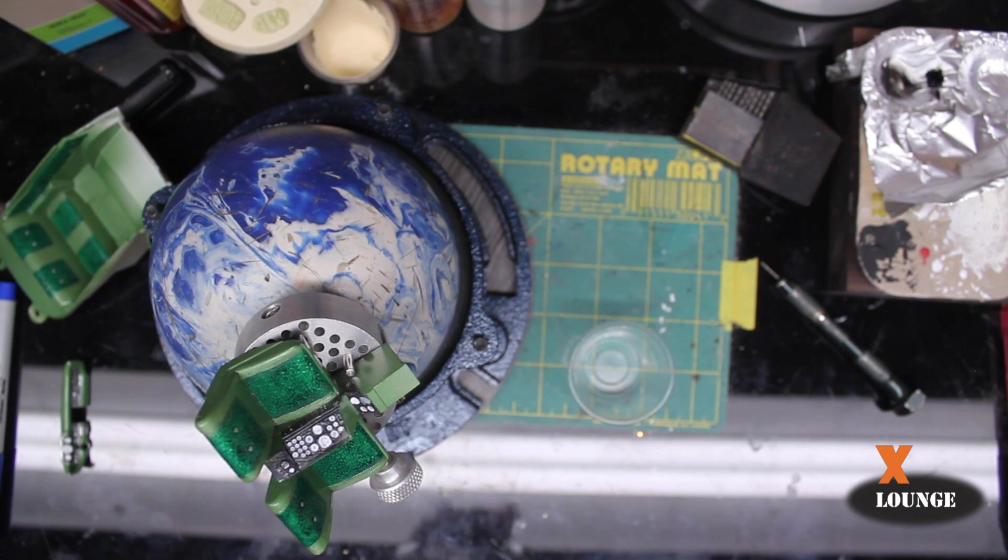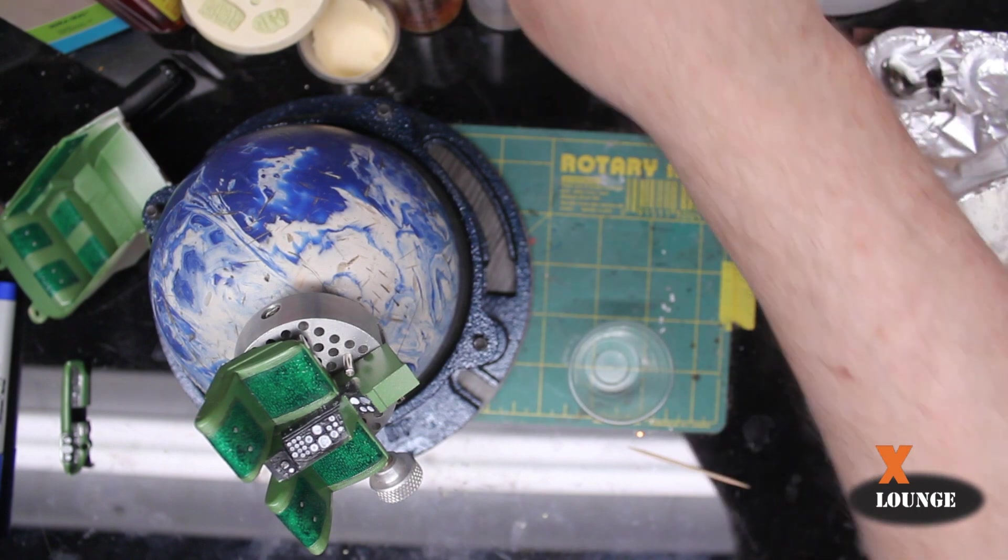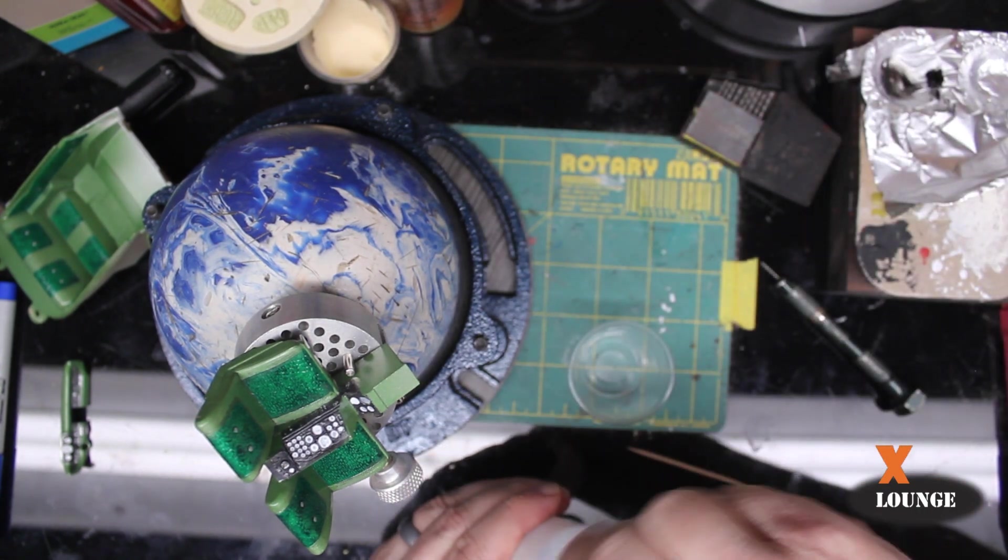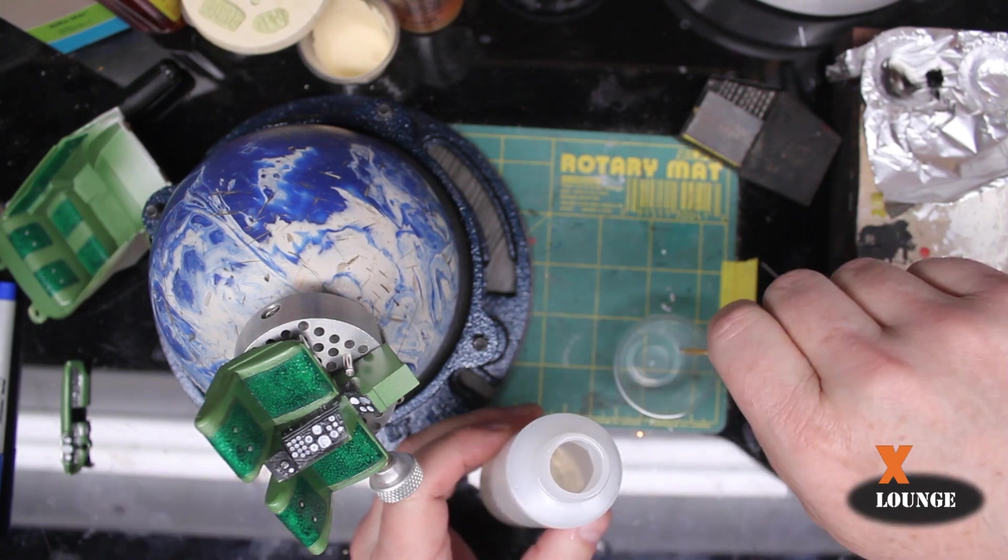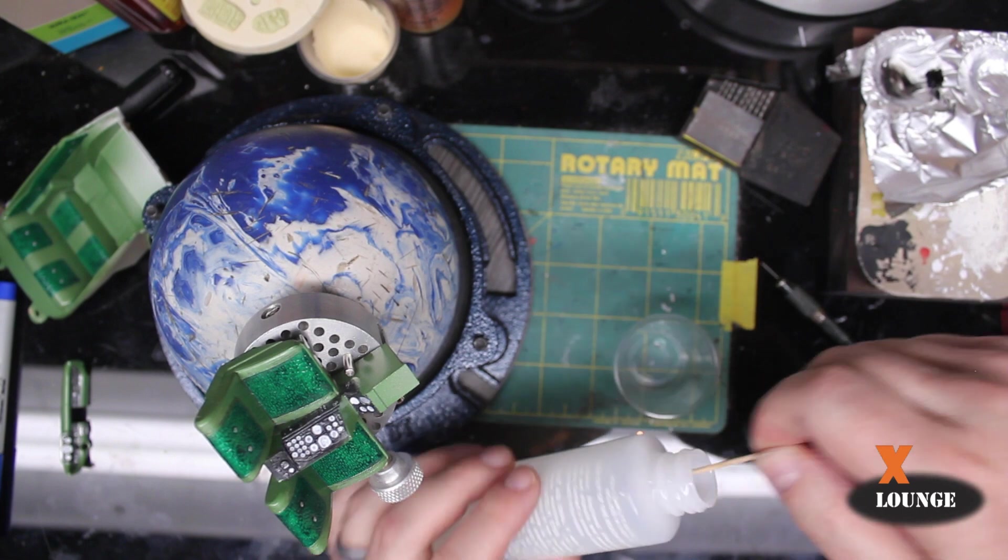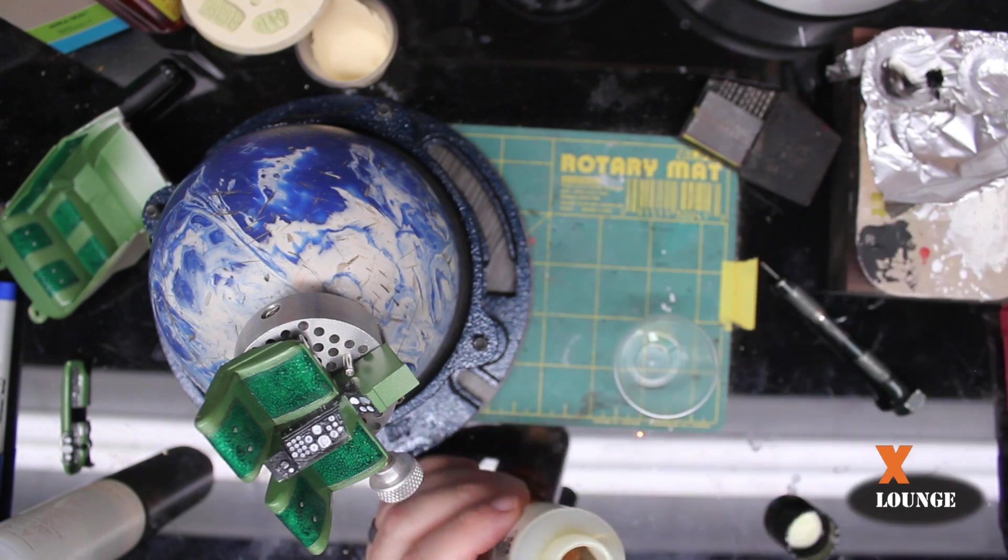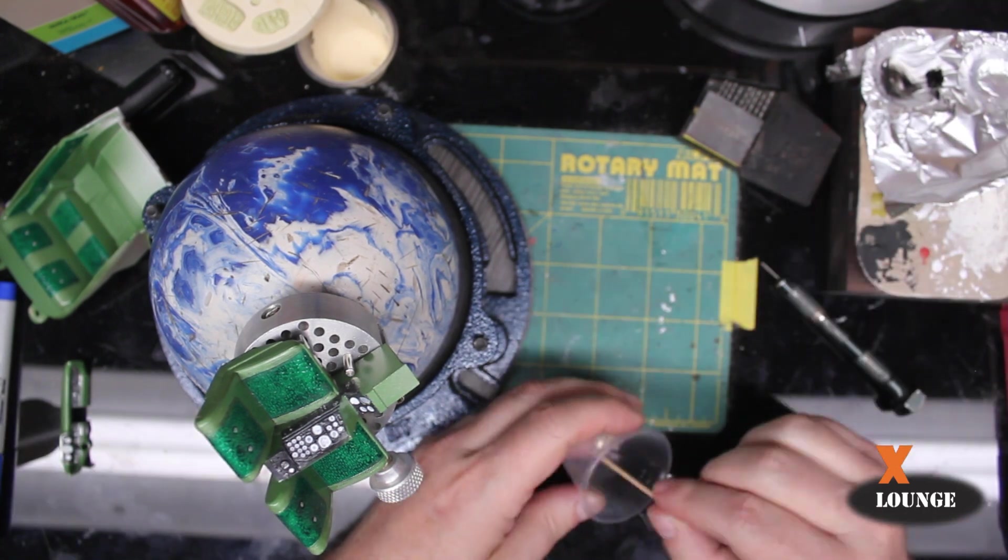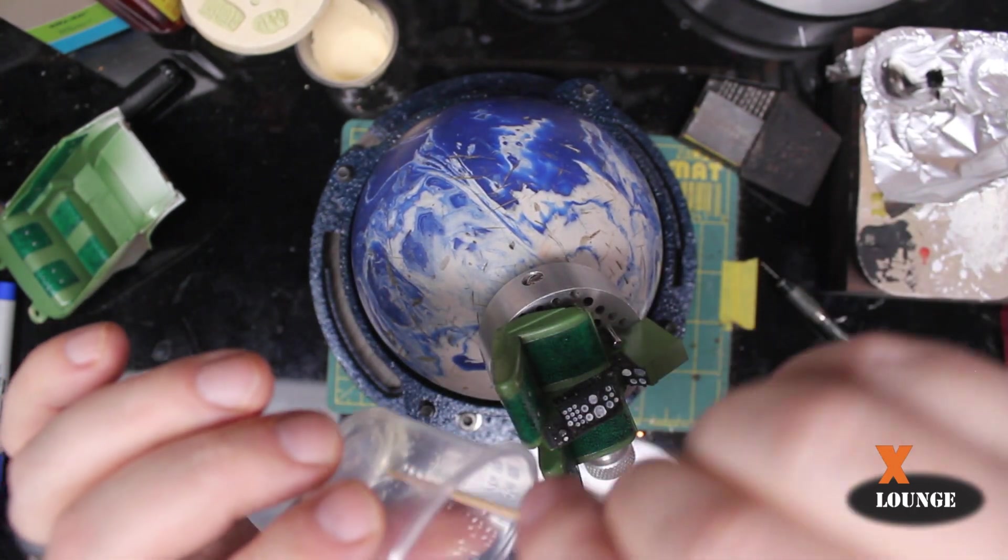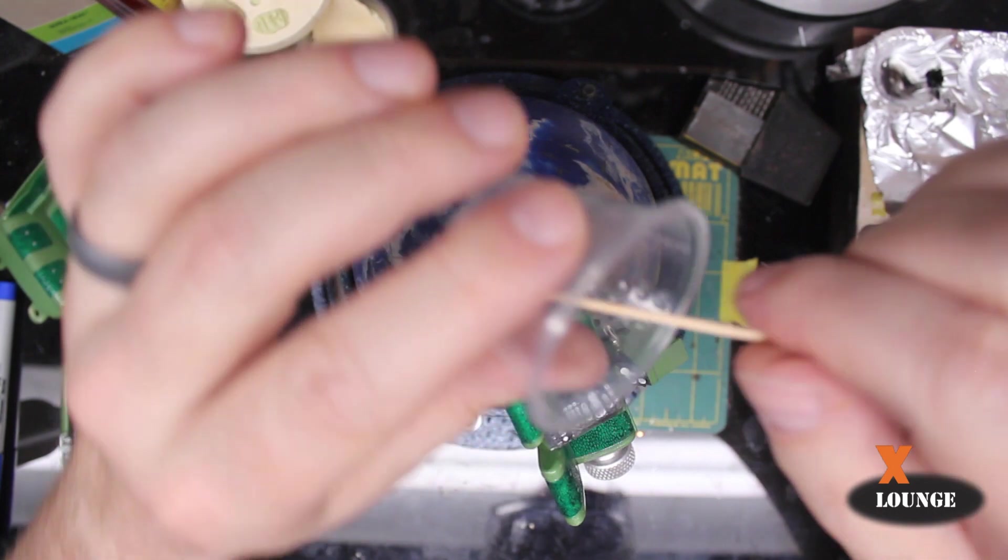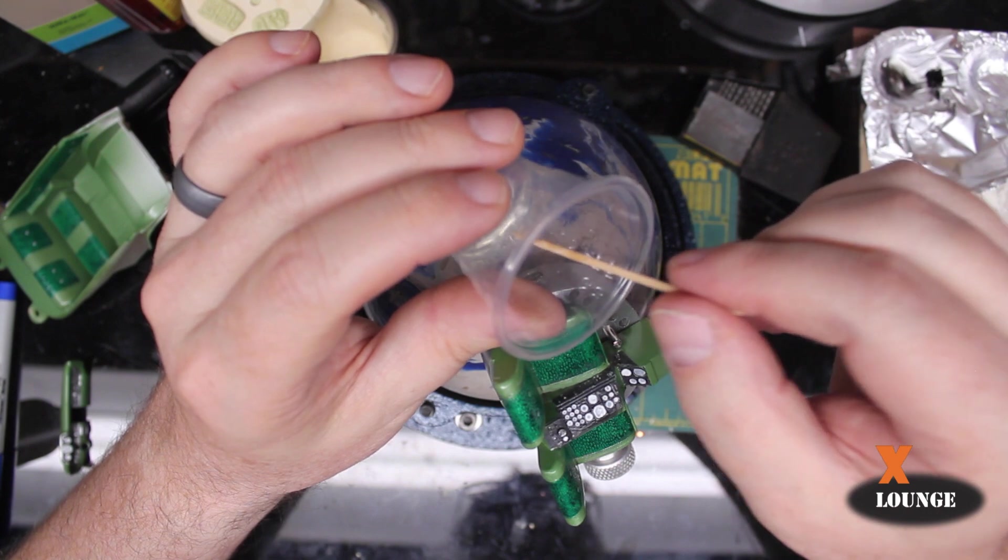Using a tiny cup, I'll mix up the epoxy. This is a 50-50 part A, part B mix. Okay. I'm going to get a dollop on the end of the toothpick there. Probably not that much.